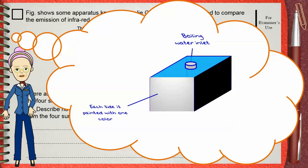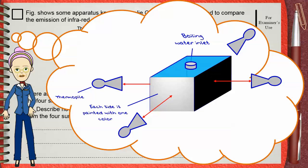Now, four thermopiles will be placed, each one facing the center of each side. The thermopiles must be placed at equal distances. These thermopiles will detect the heat radiation emitted or radiated from the boiling water inside the cube to outside the cube. This is how you use a Leslie Cube to compare the emission of infrared radiation for four differently painted surfaces.